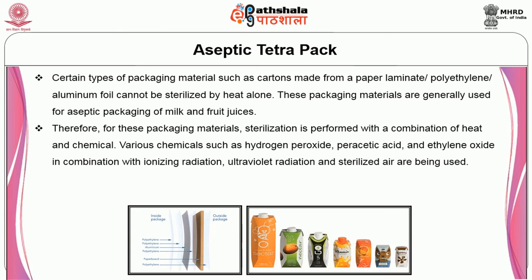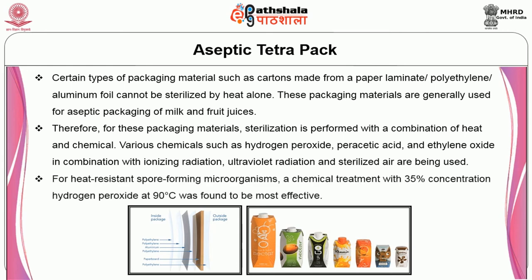Various chemicals such as hydrogen peroxide, peracetic acid and ethylene oxide in combination with ionizing radiation, ultraviolet radiation and sterile air are being used. For heat resistant spore forming microorganisms, a chemical treatment with 35% concentration hydrogen peroxide at 90 degrees Celsius was found to be most effective.